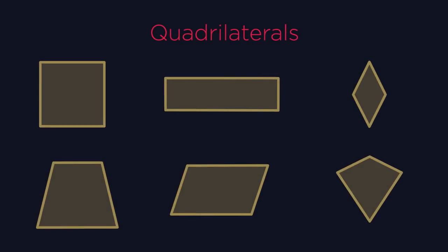What do these shapes all have in common? They're all two-dimensional shapes with four sides and four angles. These are known as quadrilaterals.